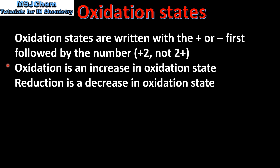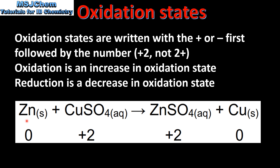As we've seen in a previous video, oxidation is an increase in oxidation state and reduction is a decrease in oxidation state. For example, in this reaction the zinc has an oxidation state of 0 and the copper 2+ ion has an oxidation state of plus 2. The zinc 2+ ion has an oxidation state of plus 2 and the copper has an oxidation state of 0.